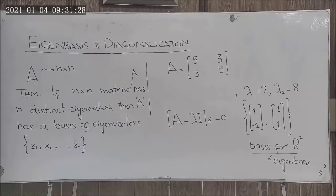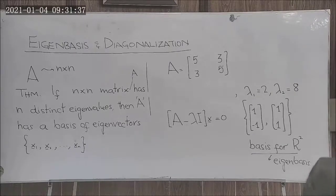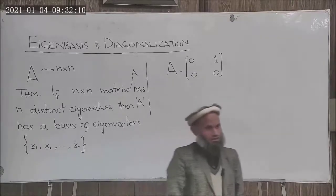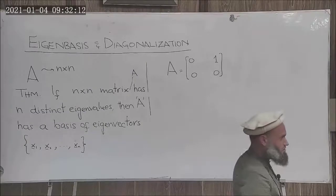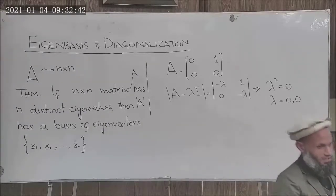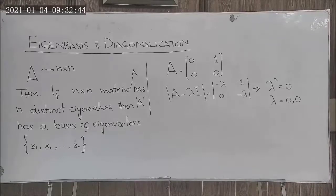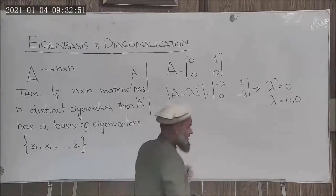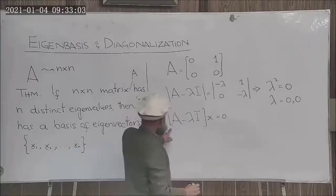What if the matrix does not have n distinct eigenvalues? In that case it may or may not have an eigenbasis. We give some examples. Here we have a matrix — its eigenvalues can be easily determined — and it does not have distinct eigenvalues.